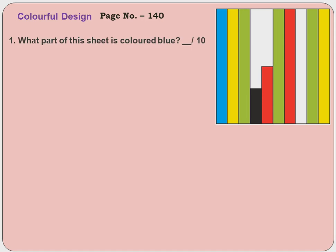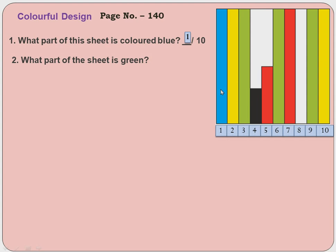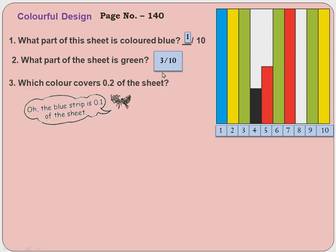Now, colourful design — what part of the sheet is coloured blue? First check how many parts there are: there are totally 10 parts. Out of 10 parts, only 1 part is coloured blue, so the answer is 1/10. What part is green? There are 3 green parts, so 3/10. The blue strip is 0.1 of the sheet — blue is 1 out of 10 parts, and 1/10 can be written as 0.1.